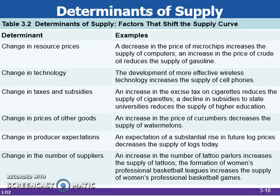If the number of sellers increases, supply increases. Economic profits in the market draw producers from less profitable markets into this market. If the number of sellers decreases, supply decreases. Economic losses in the market cause producers to leave the market.